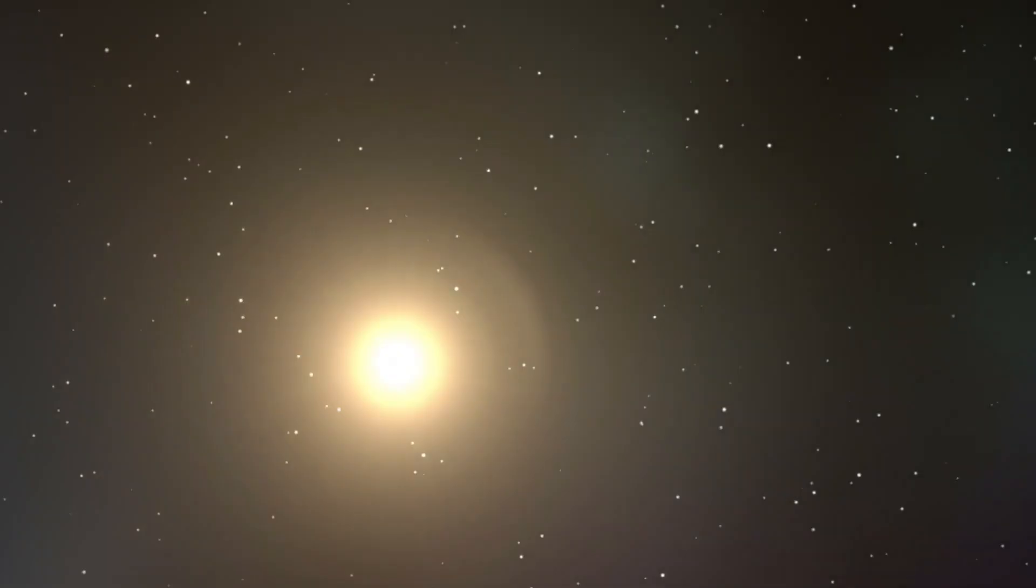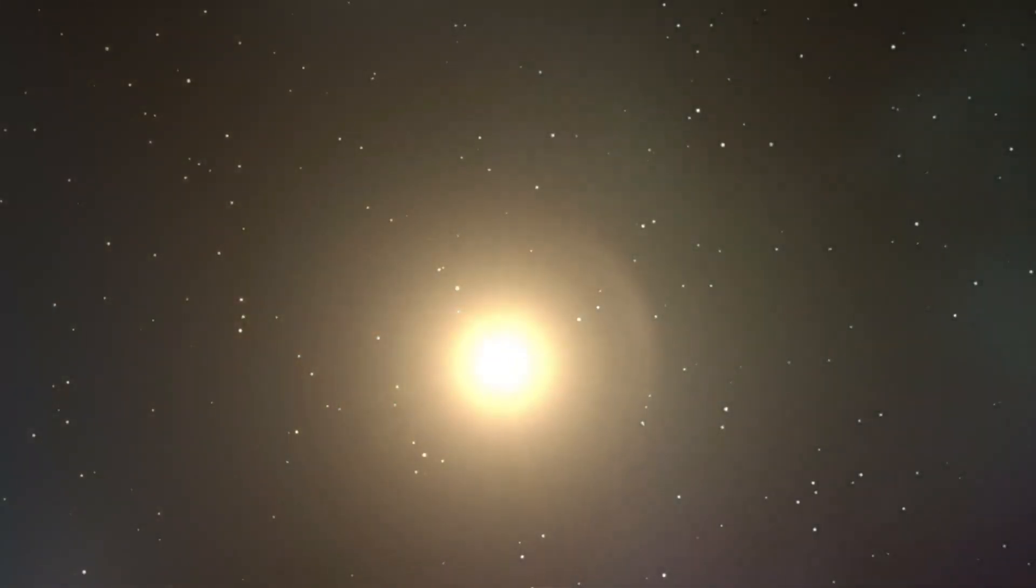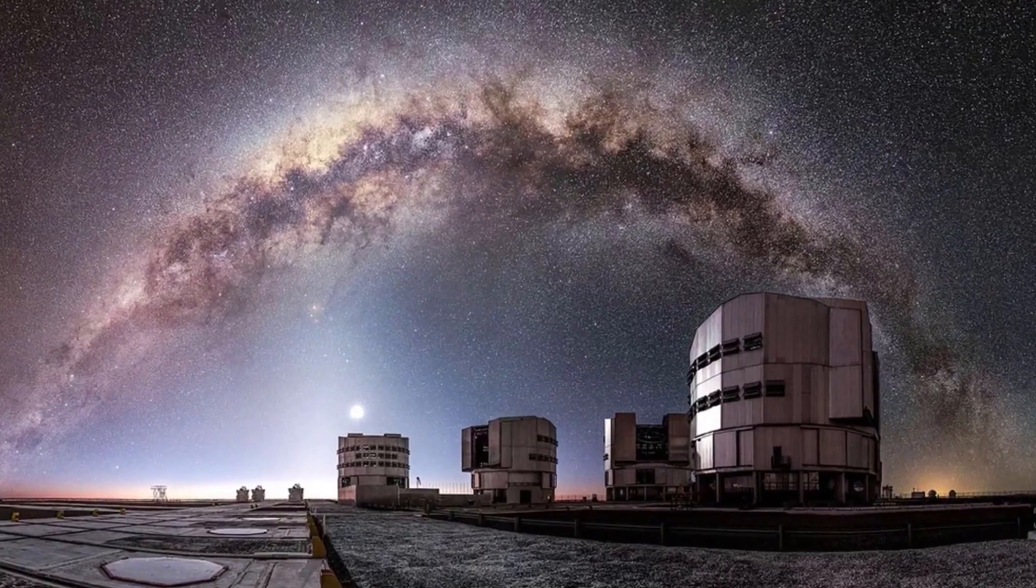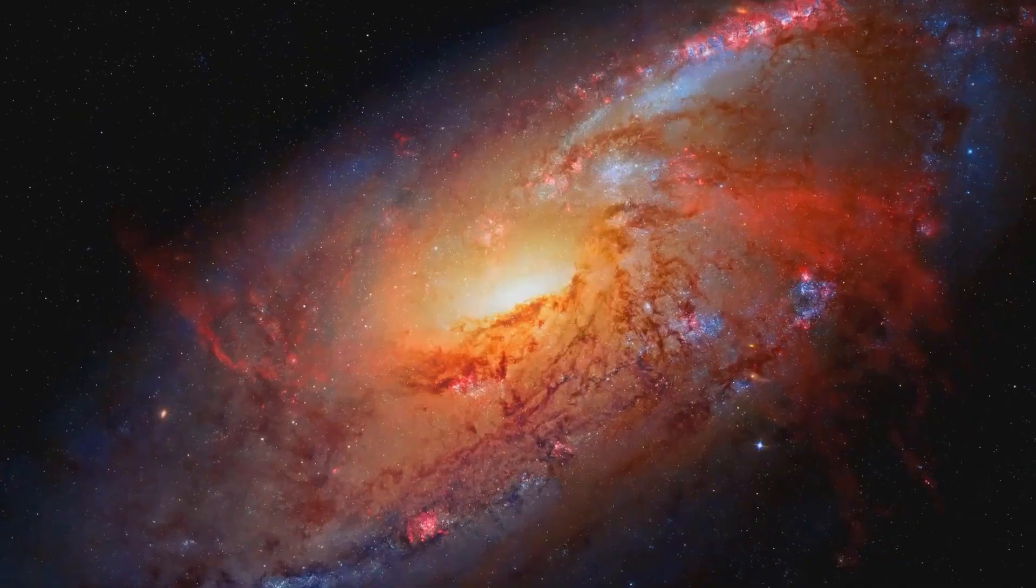These aren't static images. They're dynamic snapshots of chaos, showing how the star's magnetic fields twist and tangle, flinging material into space at speeds that defy imagination.